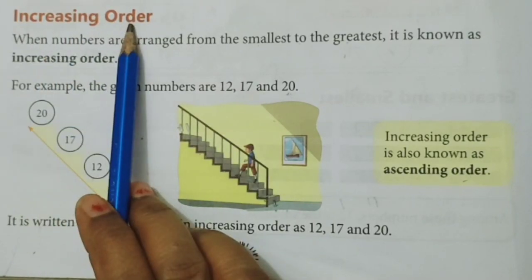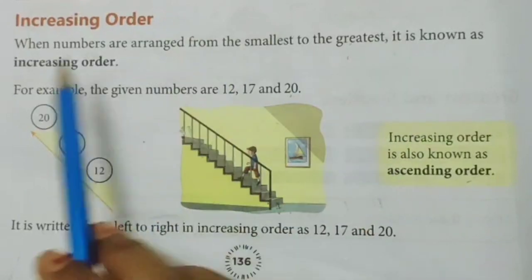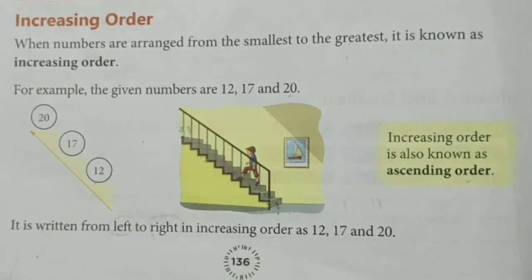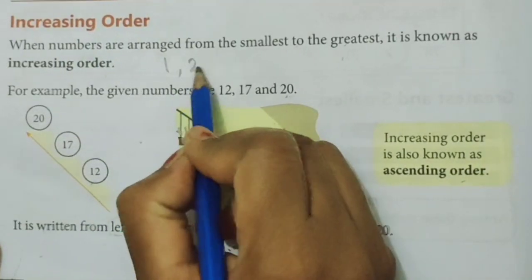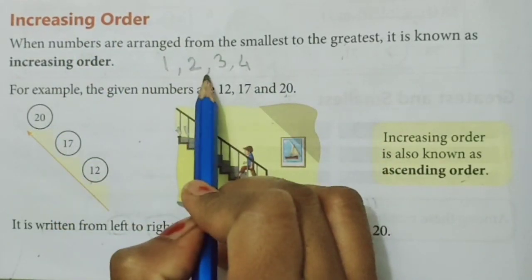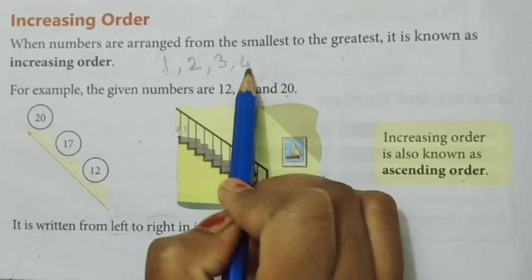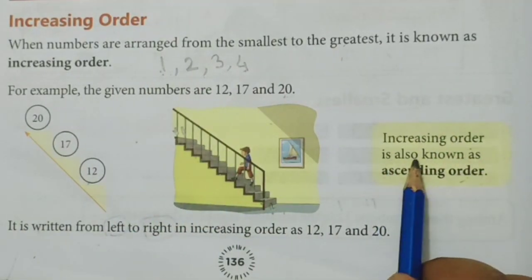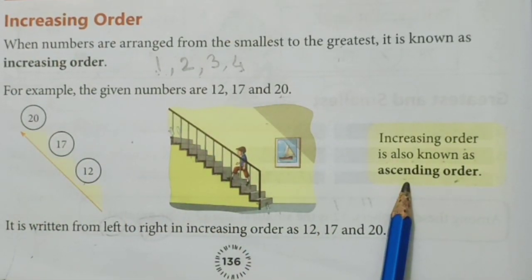First we will see increasing order. When the numbers are arranged from smallest to the greatest, it is known as increasing order. Increasing means — suppose you are in the first standard. Then in next year you will be in the second standard, then third standard, fourth standard. That means this is nothing but the increasing order — smaller number to the greatest number. And increasing order is also known as ascending order. Increasing order को ही हम ascending order बुलाते हैं in the language of mathematics.